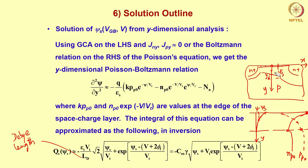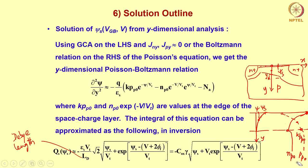Now let us move on to the right hand side. The term k times pp0: pp0 is the hole concentration at the depletion edge. Then np0 is the equilibrium concentration of electrons at the depletion edge. And np0 into exponential of minus V by Vt is the concentration of electrons at the depletion edge accounting for the channel voltage.